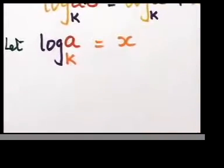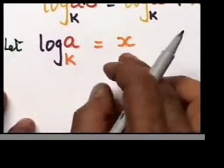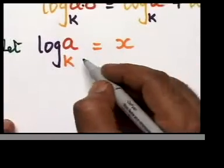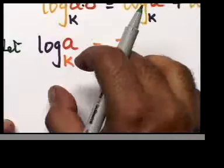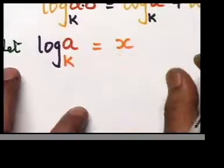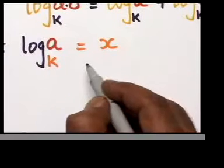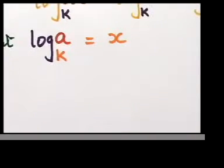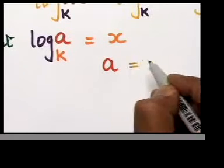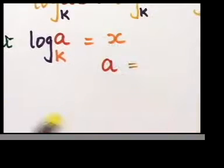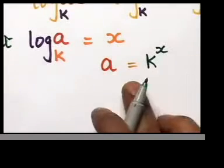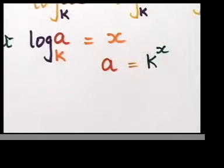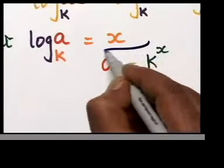This is the logarithmic form. Now we change this into exponential form — we know the law. We put the arrow and say a equals to k to the power x. So let's see: it changes to a equals to k to the power x. That's the exponential form. Keep this in mind — that's your equation number one.